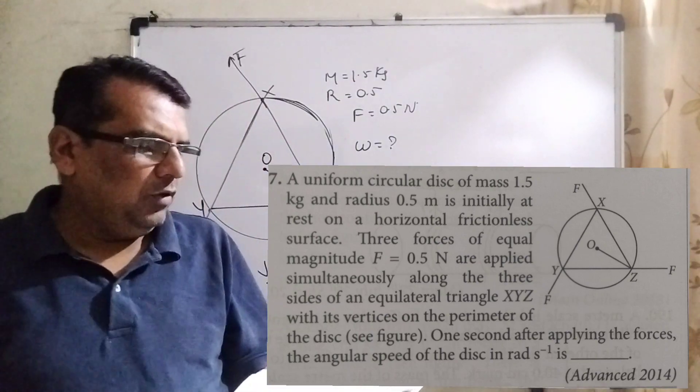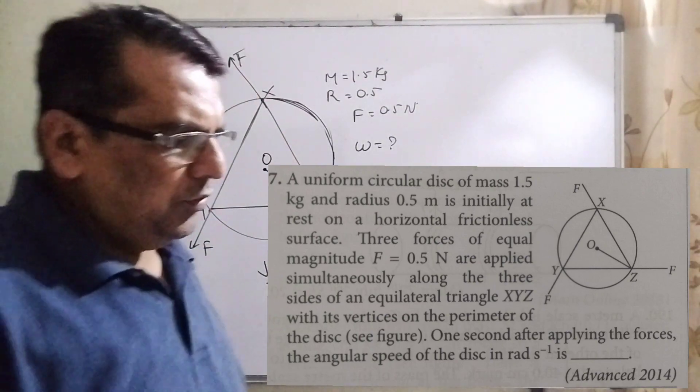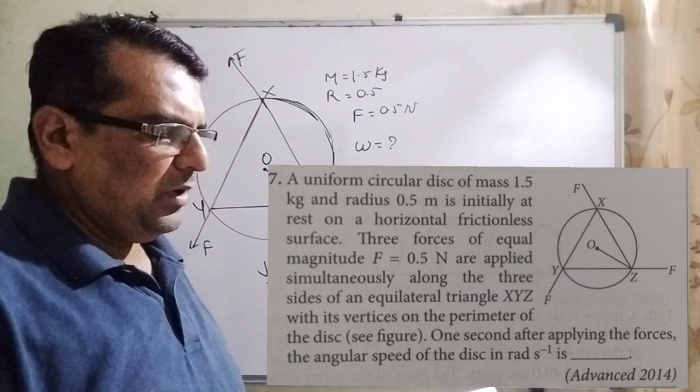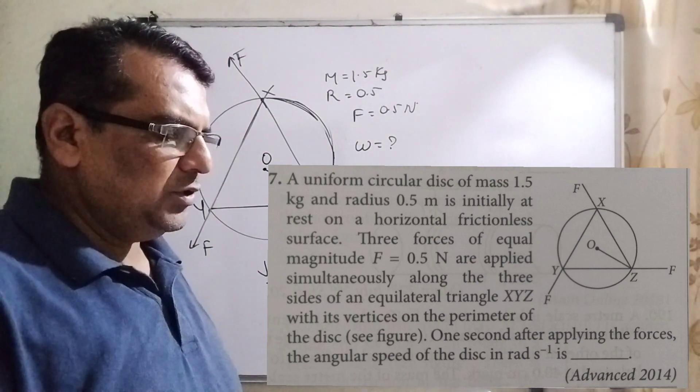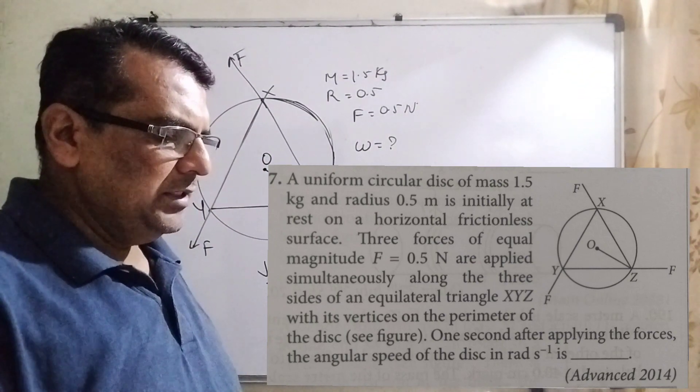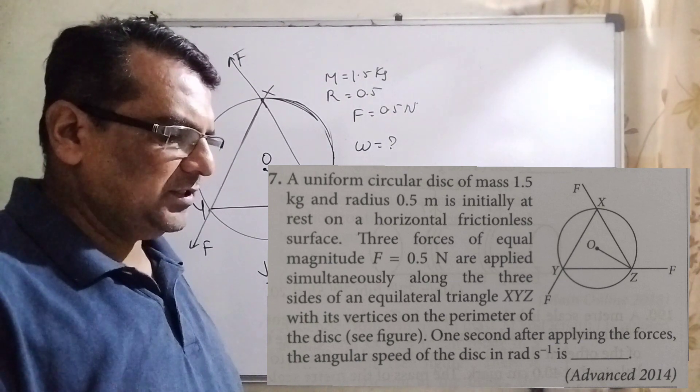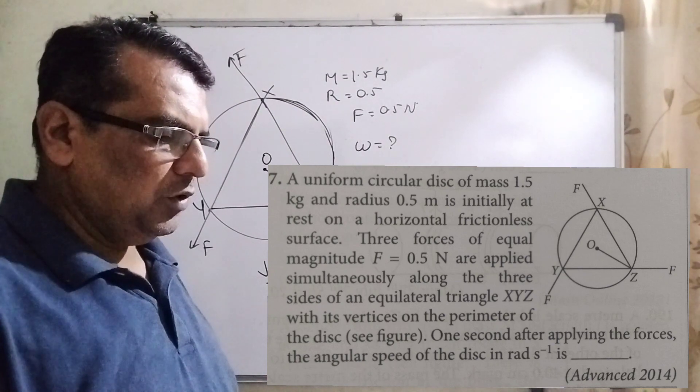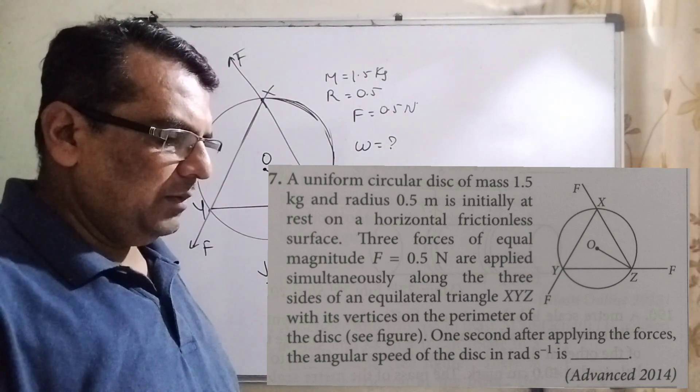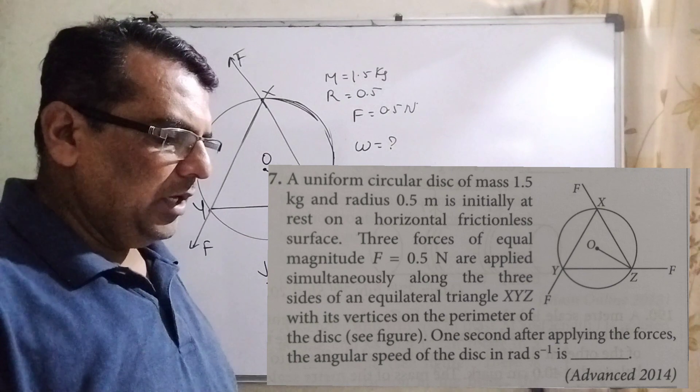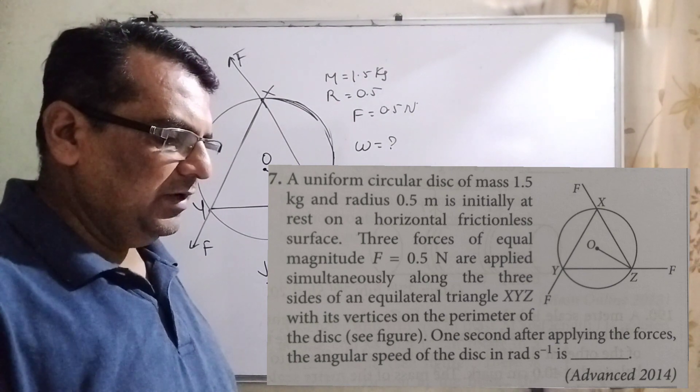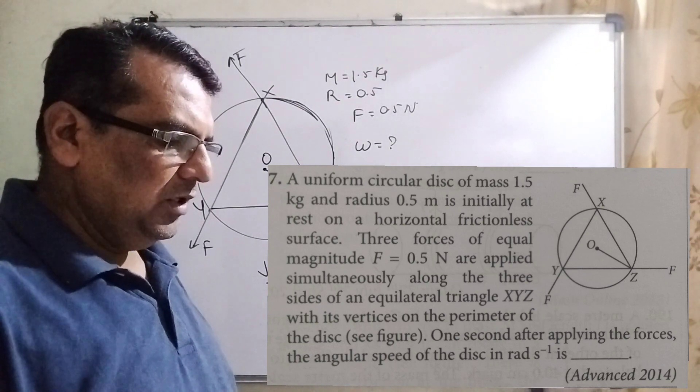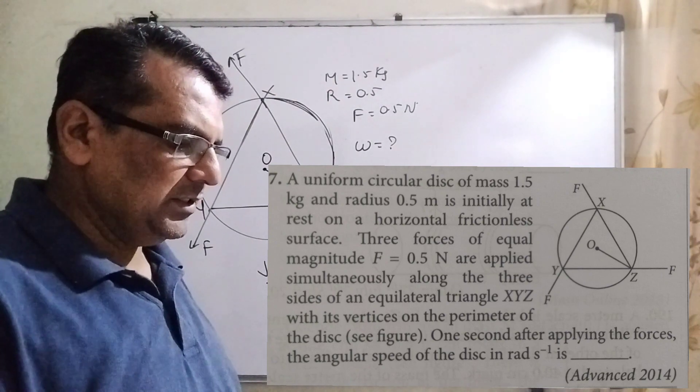Moving on, what the question says. A uniform circular disk of mass 1.5 kilogram and radius 0.5 meter is initially at rest on a horizontal frictionless surface. Three forces of equal magnitude F equal to 0.5 Newton are applied simultaneously along the three sides of an equilateral triangle XYZ with the vertices on the perimeter of the disk.